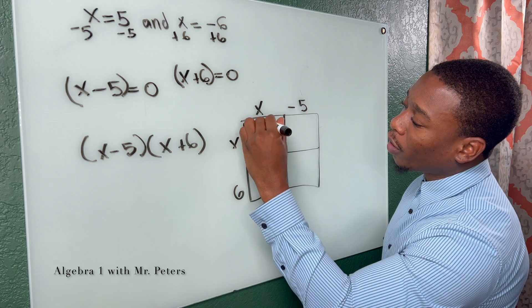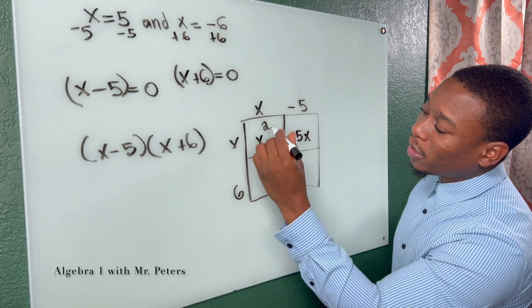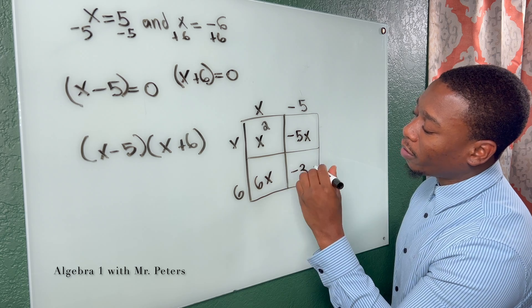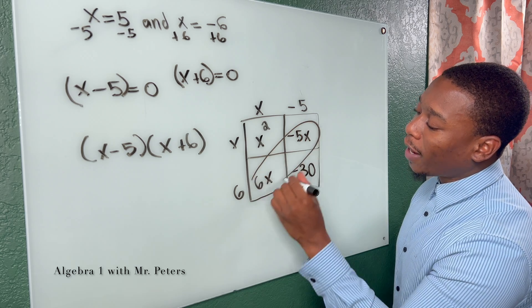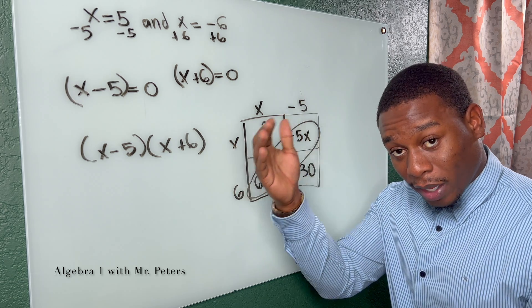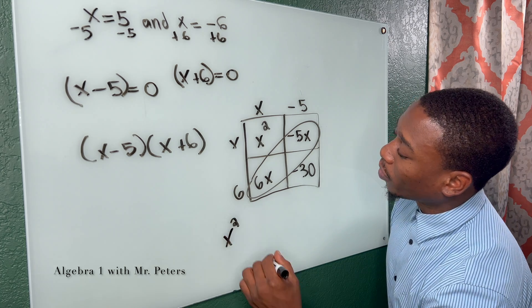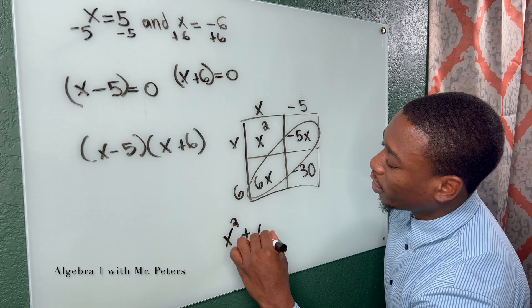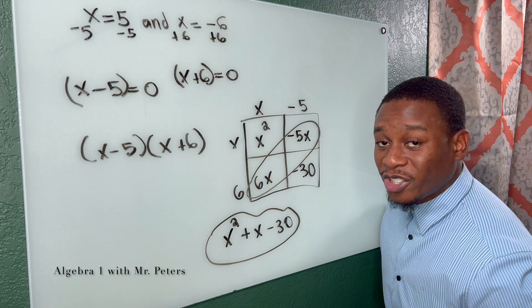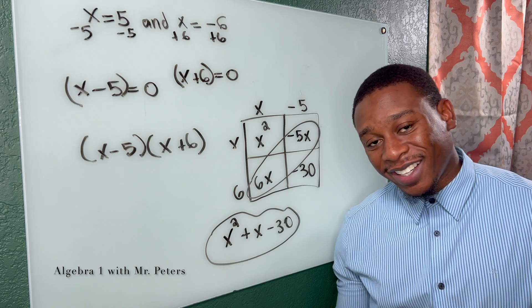So we go through x squared, x times negative five is negative five x, and six times negative five is negative 30. Like terms always run diagonally. Now we write it in standard form in its highest exponent and then going in decreasing order to our constant. So we have x squared plus x minus 30. And this is going to be the quadratic equation after multiplying our answer back together.